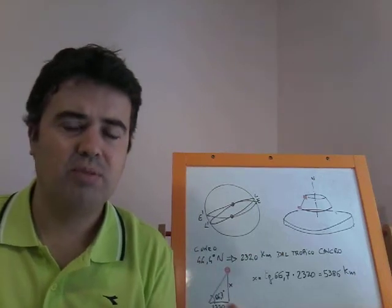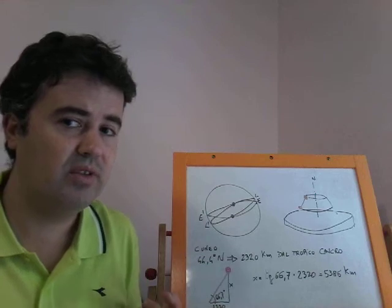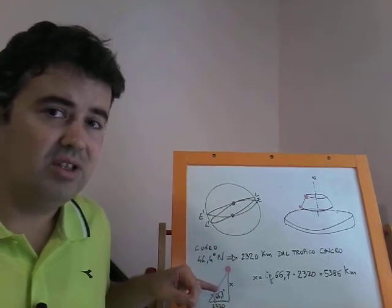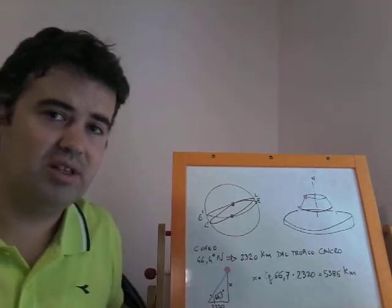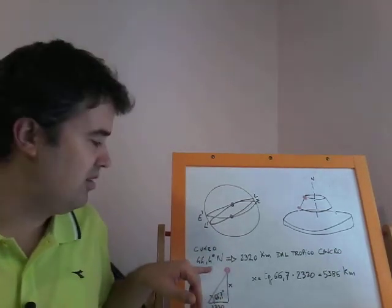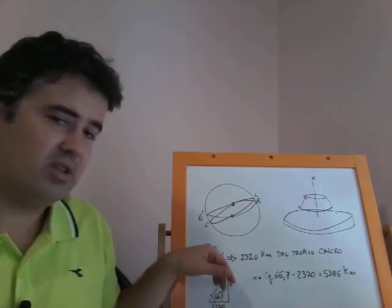However, I wanted to do a practical calculation based on the place where I live now. I live in the northern part of Italy, near Cuneo. Cuneo is a little city near here. My latitude is 44.4 degrees north.